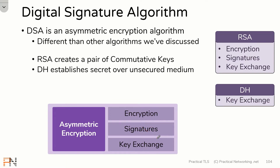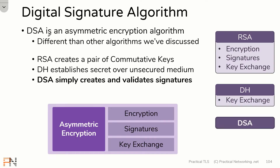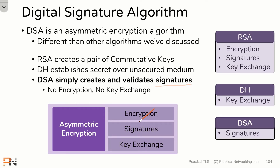Which finally brings us to DSA. DSA is another asymmetric encryption algorithm, but it can only be used for signatures. It can't do encryption, and it can't do key exchange. That is the digital signature algorithm, and that's how it's different from the other algorithms we've discussed.